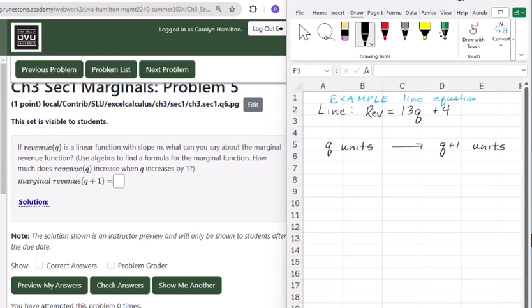Okay, we have a revenue function, and we're told it's a linear function, and it has a slope of m. So what could you say about the marginal revenue function?